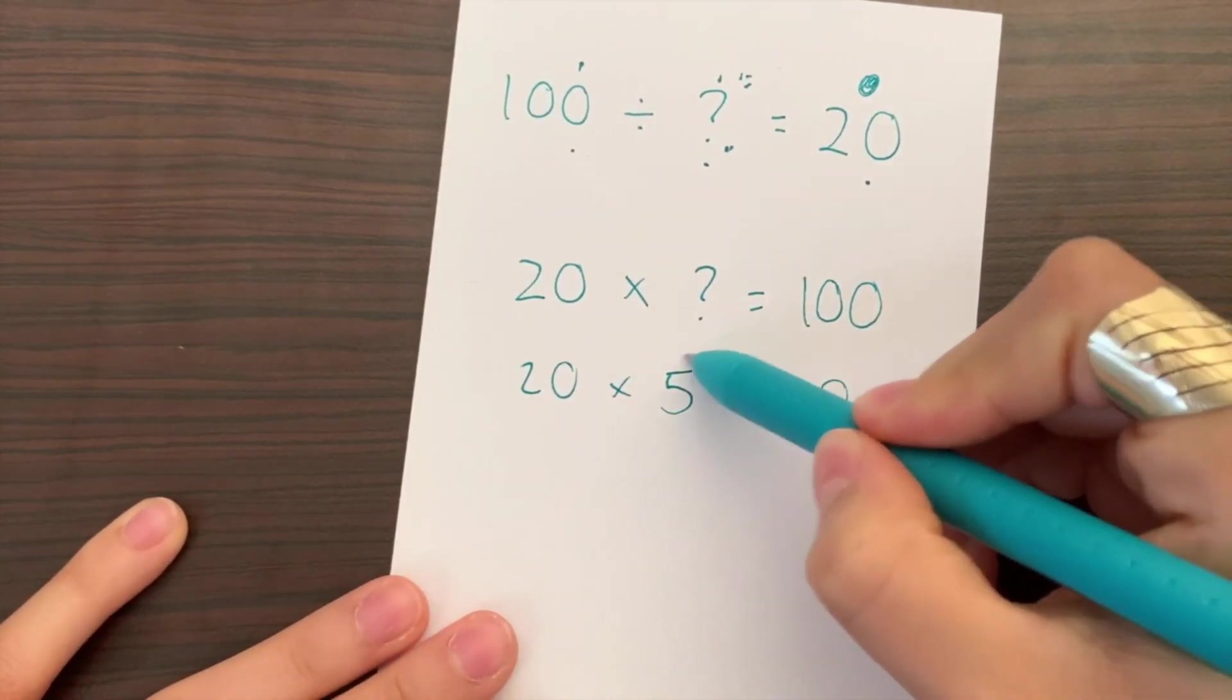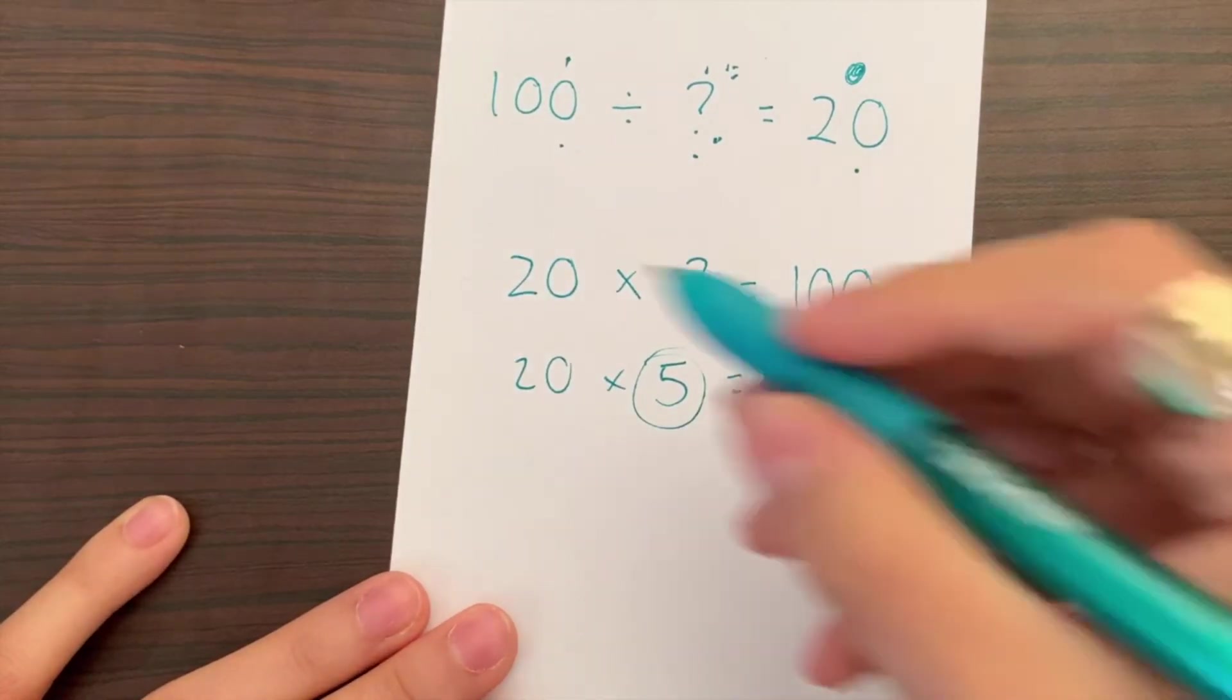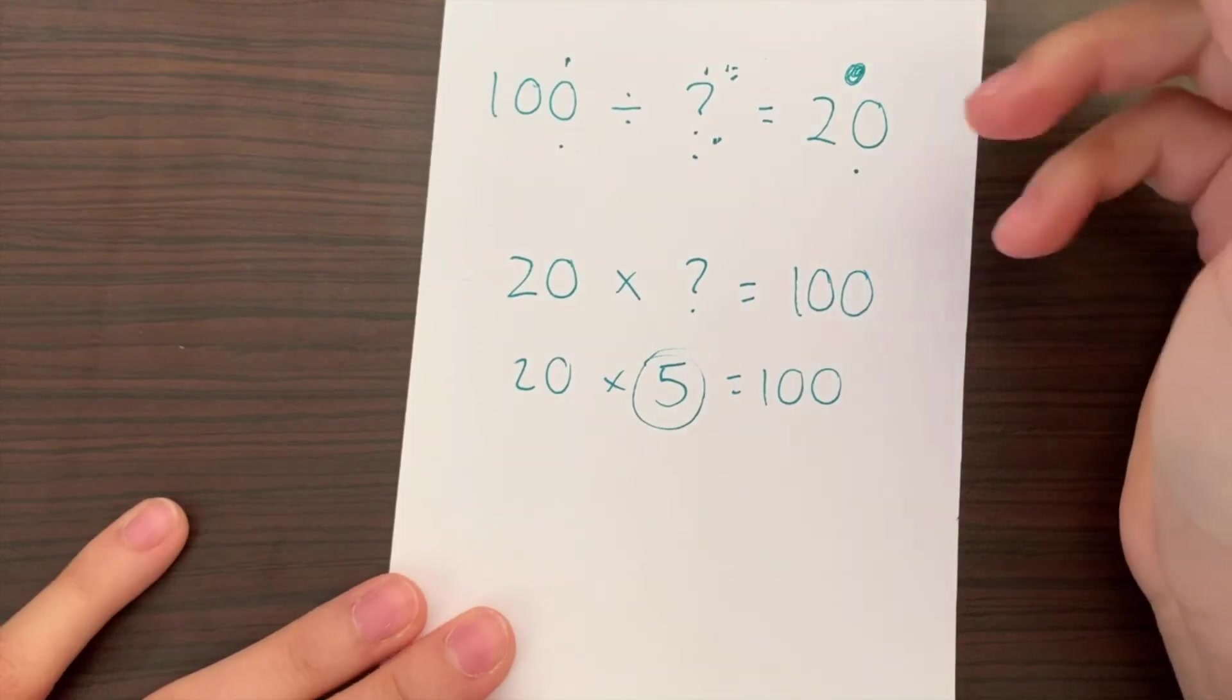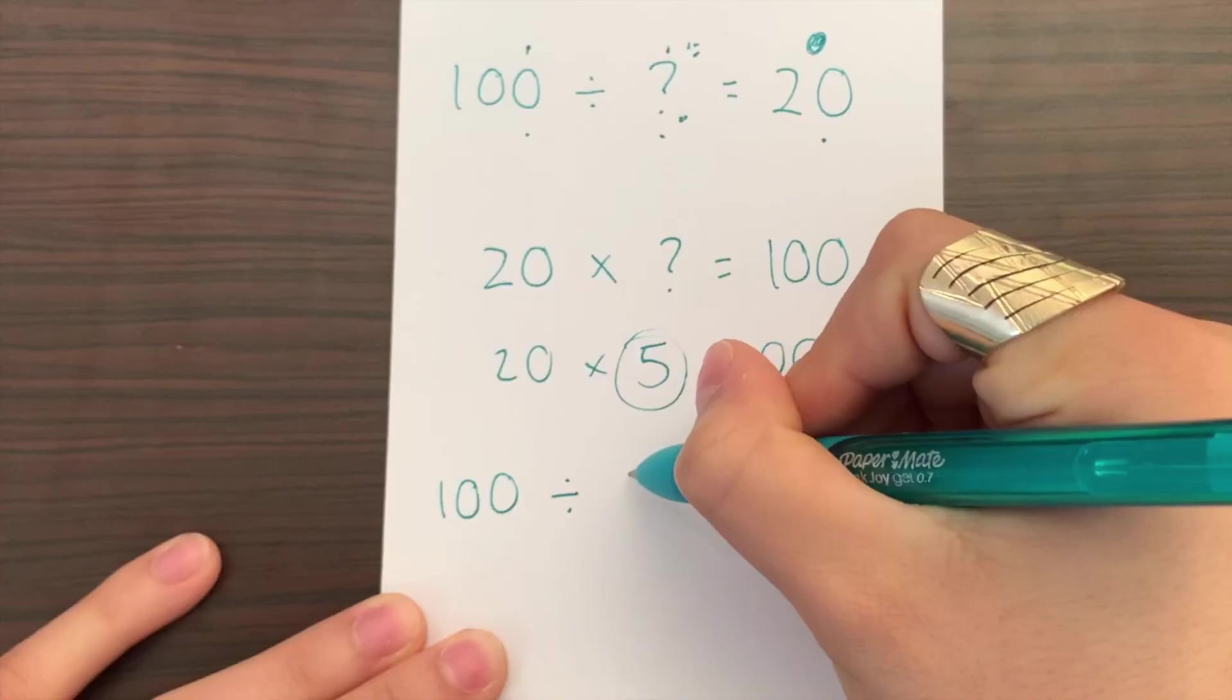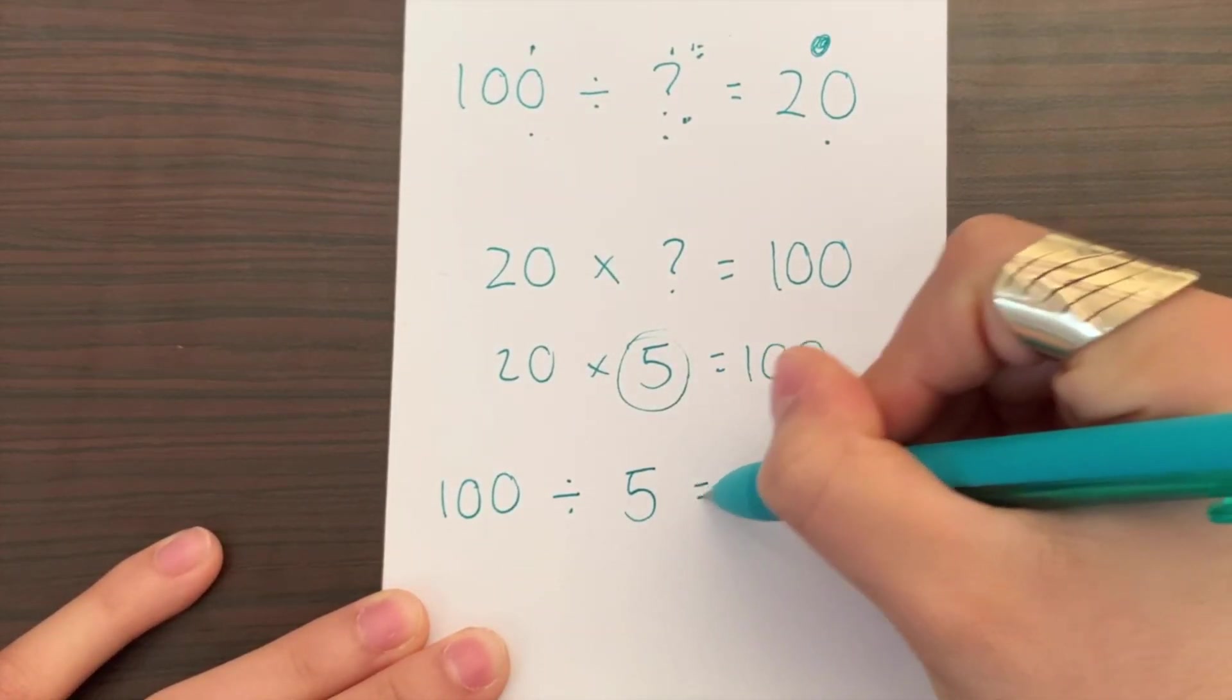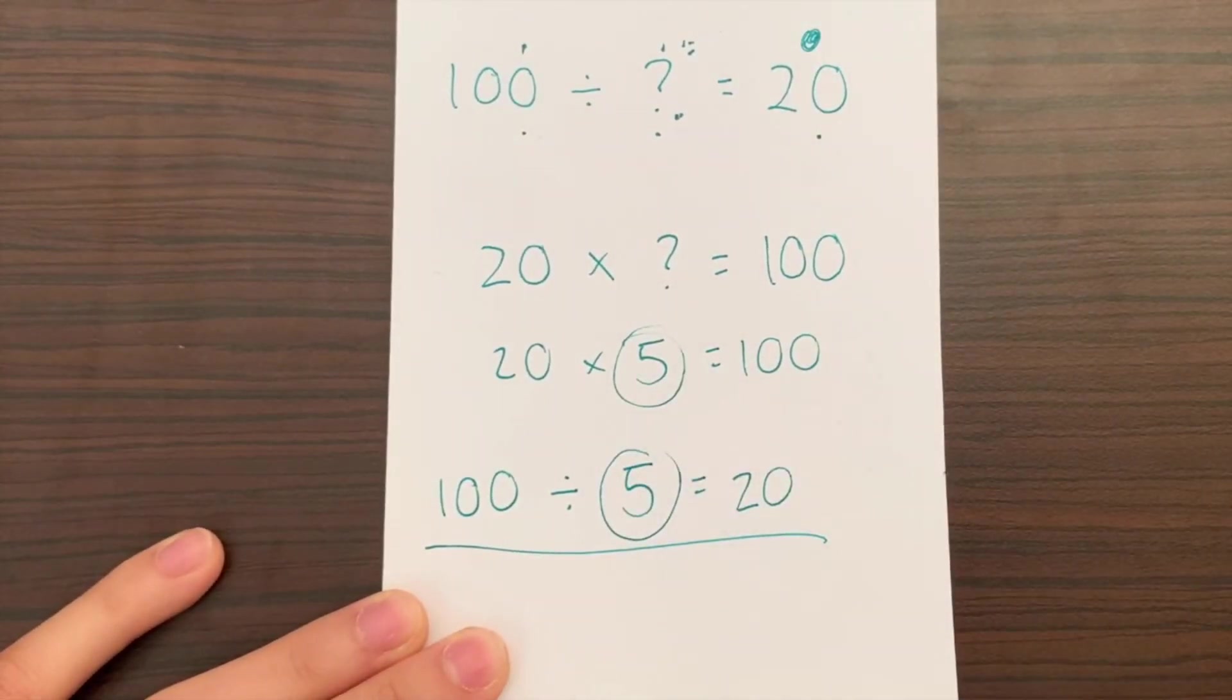So here's our missing number that we had to find, and then we can go ahead and plug that into our division problem where it was missing. So 100 divided by 5 equals 20, and that would give you your missing number.